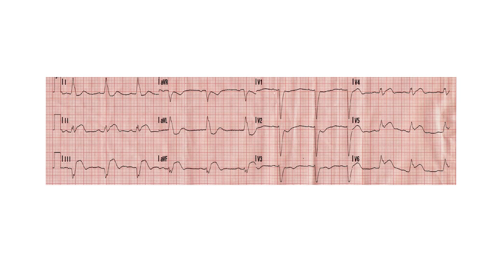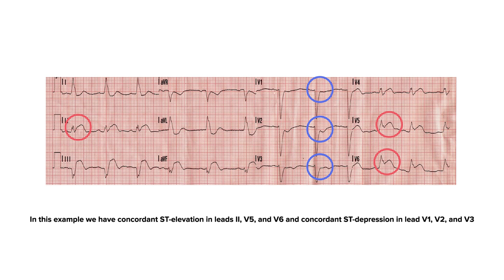Here's an example of a patient who is having chest pain. On their EKG, you can see concordant ST elevation in leads 2, V5, and V6, and concordant ST depressions in leads V1, V2, and V3. In this case, this patient has a Scarbosa score of greater than three, and therefore myocardial ischemia, even in the setting of a left bundle branch block, should be considered.